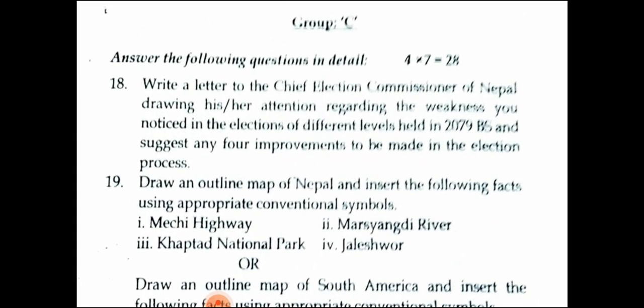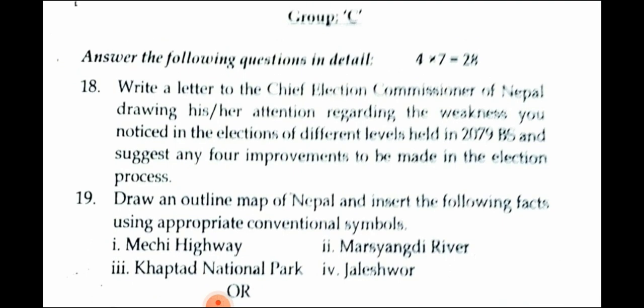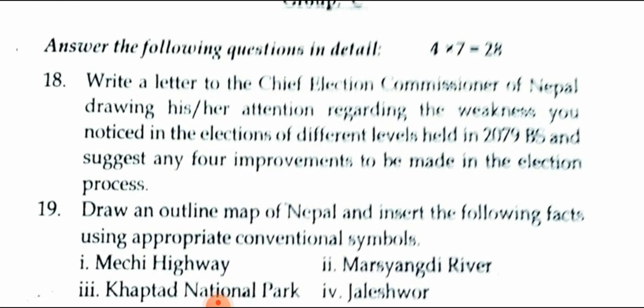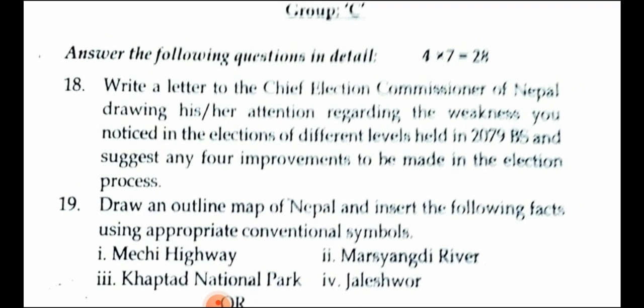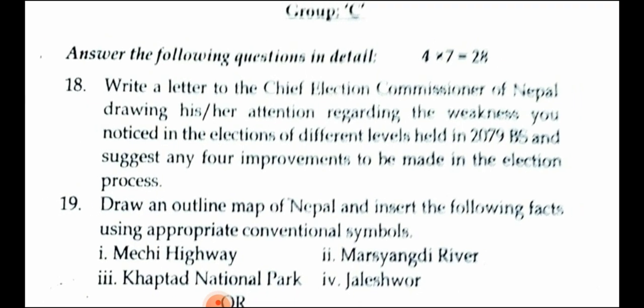Next, Group B: write a letter to the Chief Election Commissioner of Nepal, drawing his or her attention regarding the weaknesses you noticed in the election of different levels held in 2079, and suggest any improvements to be made in the election process. This carries 3 plus 4, which is 7 marks. Write a few weaknesses in full sentences.